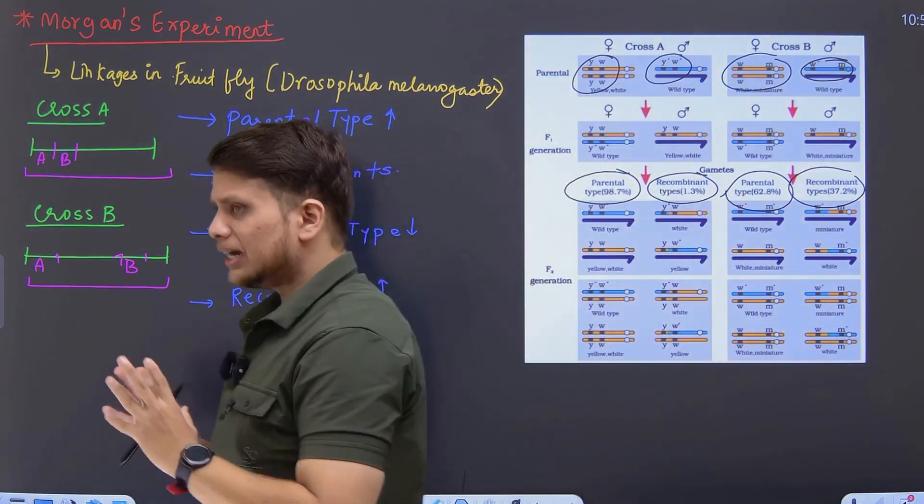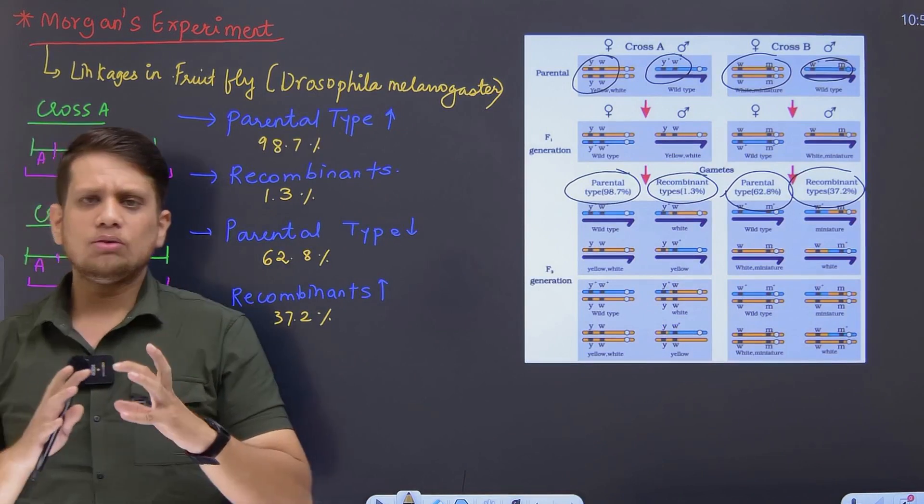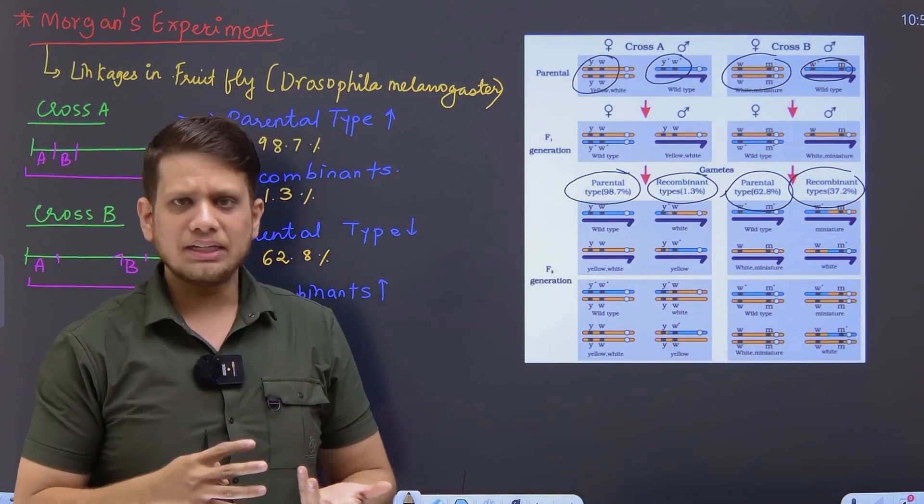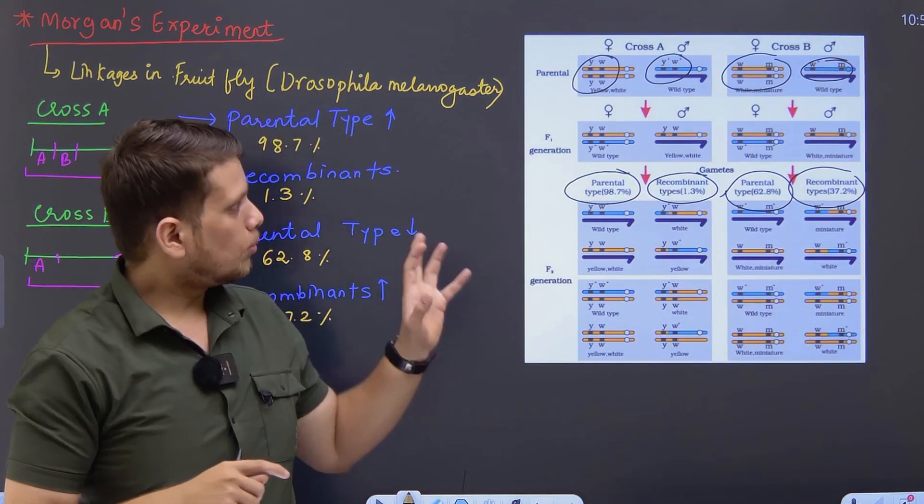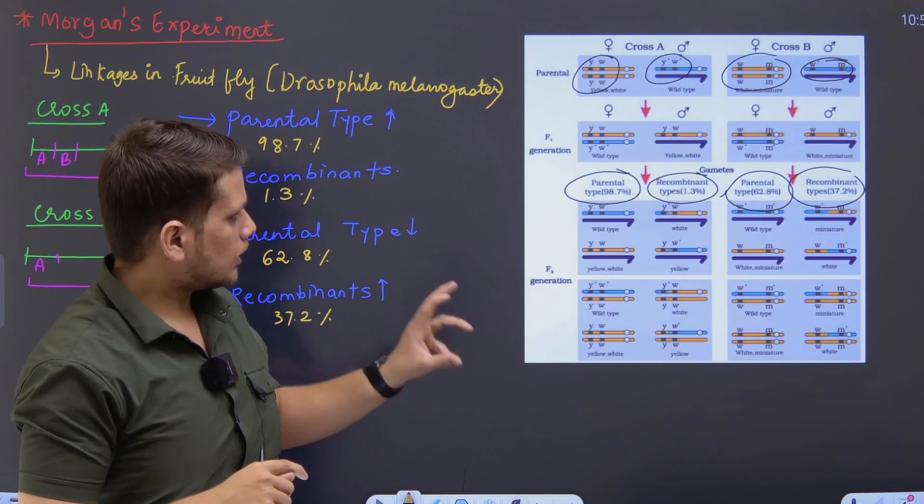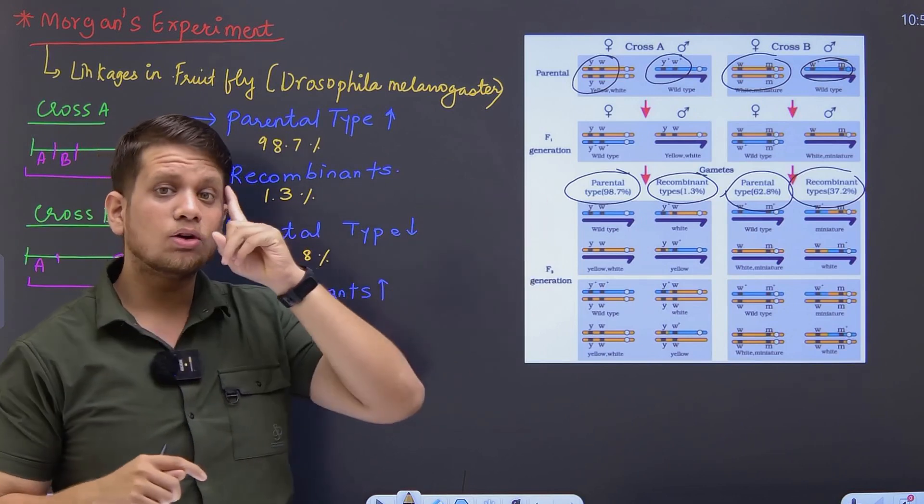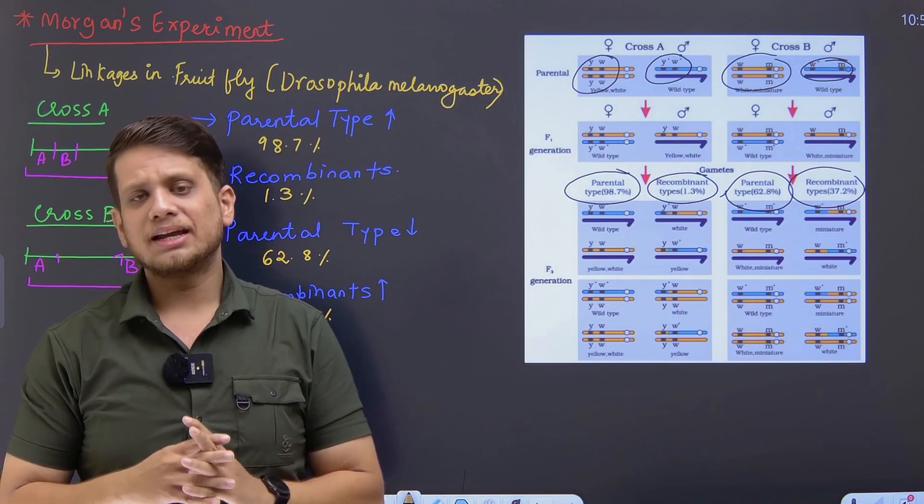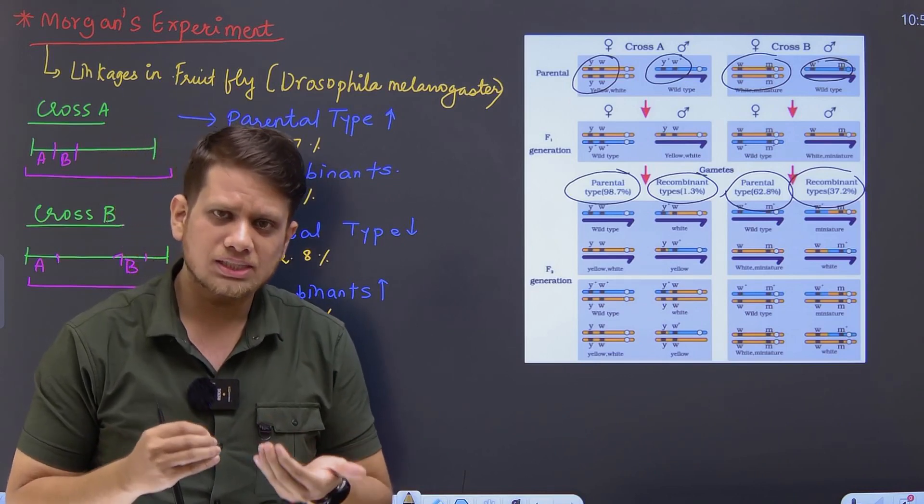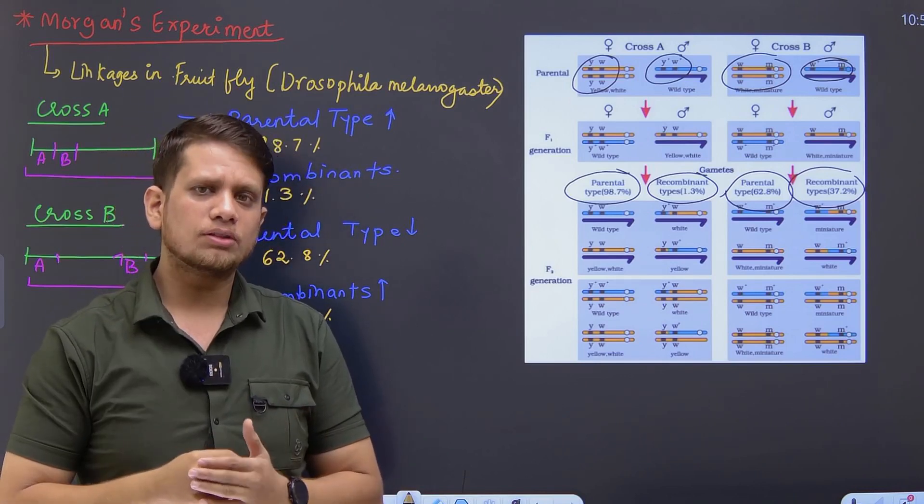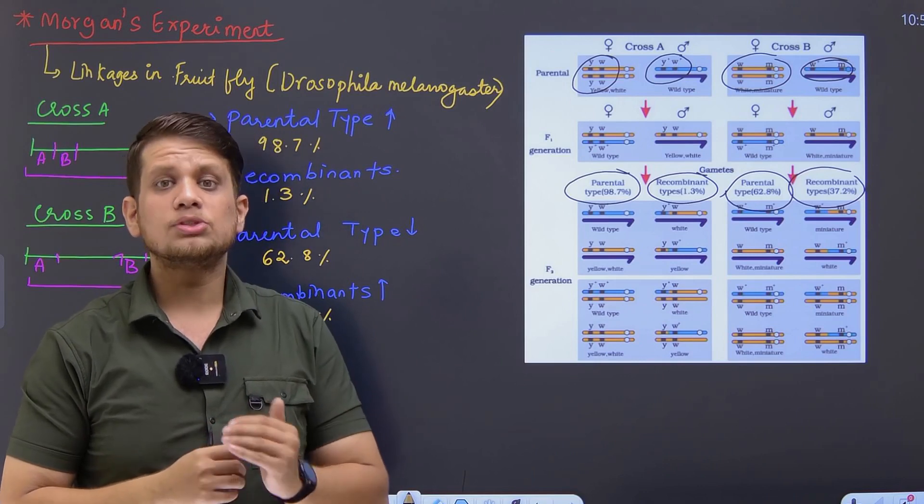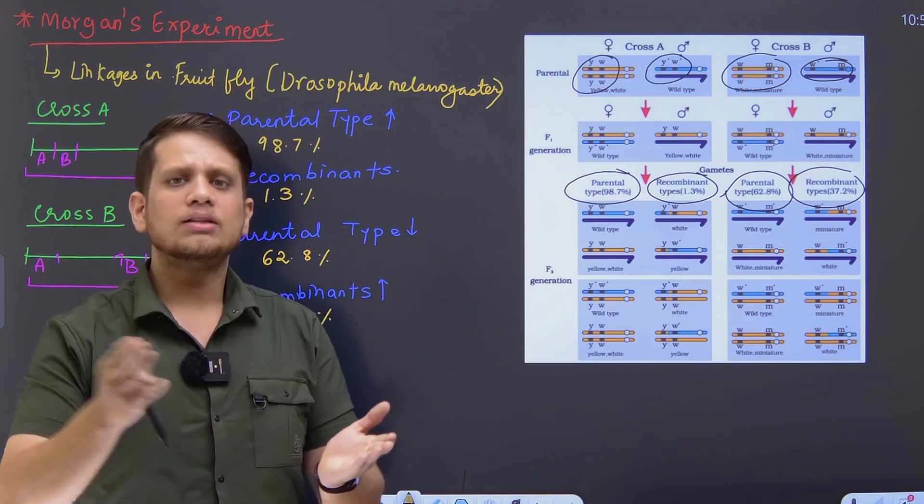So students, I think from this topic no more detailed concepts are expected. Definitely. Morgan's experiment, as much as you should know with respect to percentage and the concept, you should know exactly what process he did in what way. And then you can talk further and proceed by understanding the other concepts of linkage.